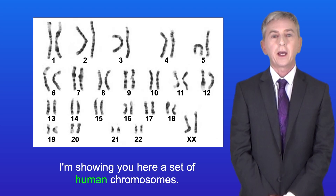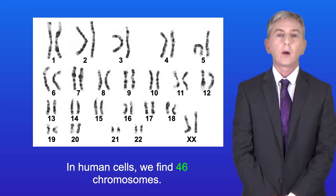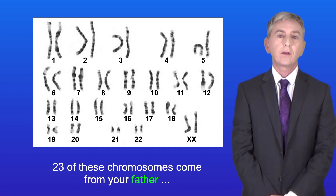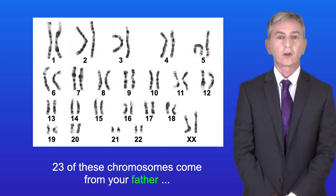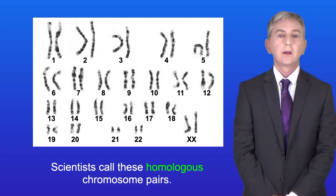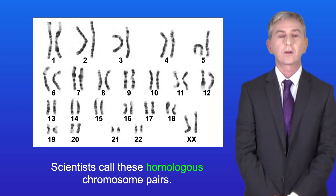Here I'm showing you a set of human chromosomes. In human cells we find 46 chromosomes — 23 come from your father and 23 come from your mother. Scientists call these homologous chromosome pairs.